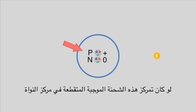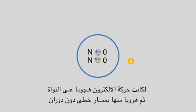If the positive charge was located at the center of the nucleus, the electron's movement would have been a linear attack and escape-like movement instead of an elliptic movement.